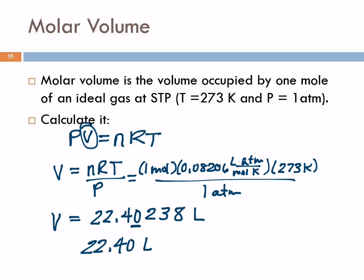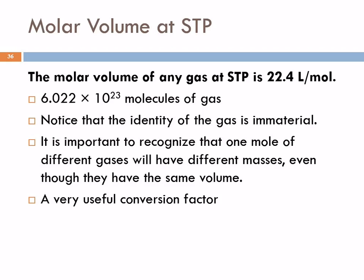The molar volume of any gas is 22.4 liters per mole at STP. Remember that a mole is 6.022 × 10²³ molecules or atoms of gas. What's different about gases is that which gas we're talking about doesn't matter — it could be carbon monoxide, oxygen, or xenon. One mole of any gas has the same volume. The masses will be different, but the volumes are the same, making this a very useful conversion factor.